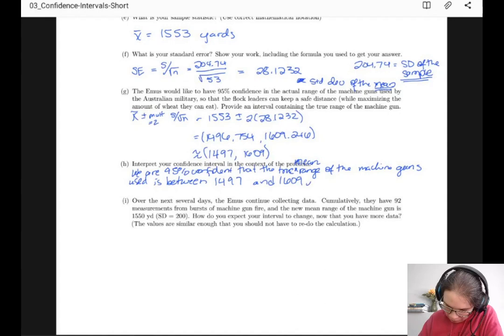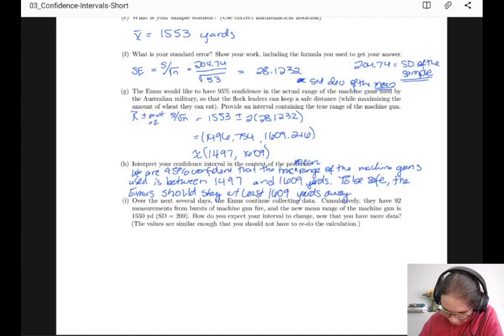To be safe, the emus should stay at least 1609 yards, 1610 yards away from the machine guns.